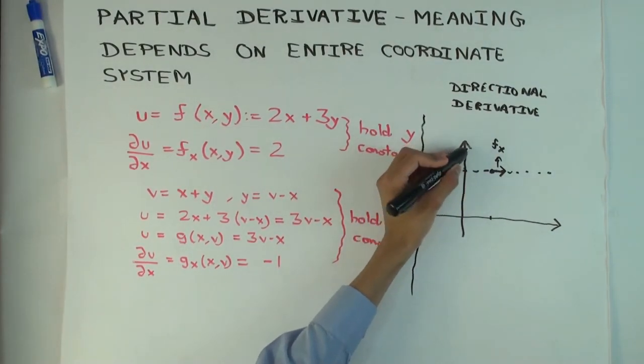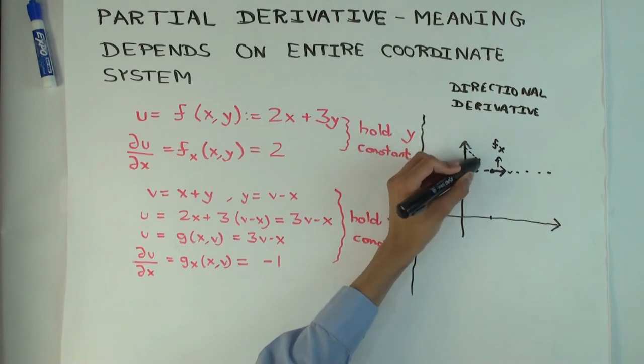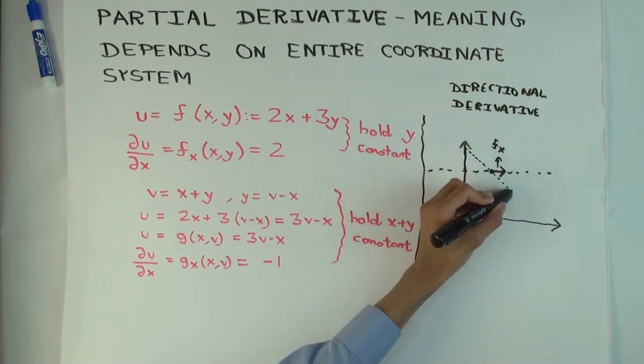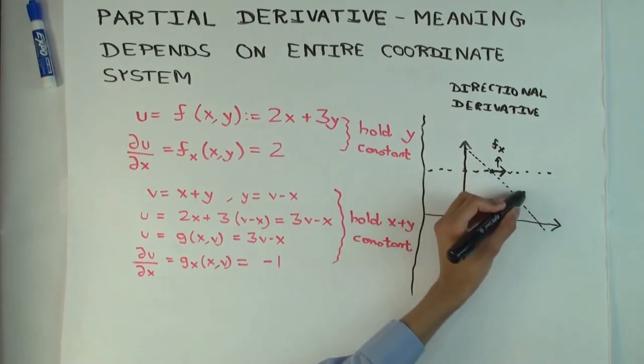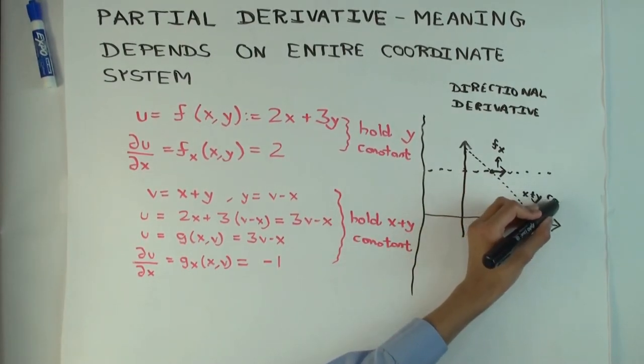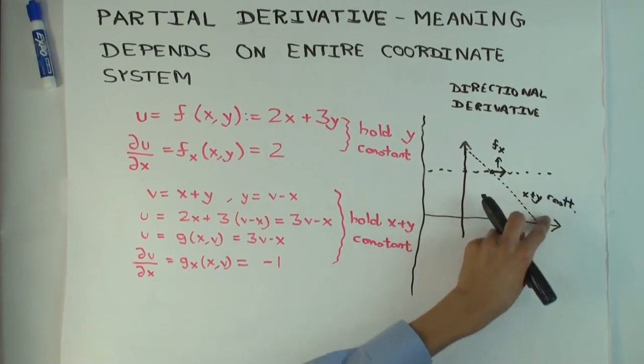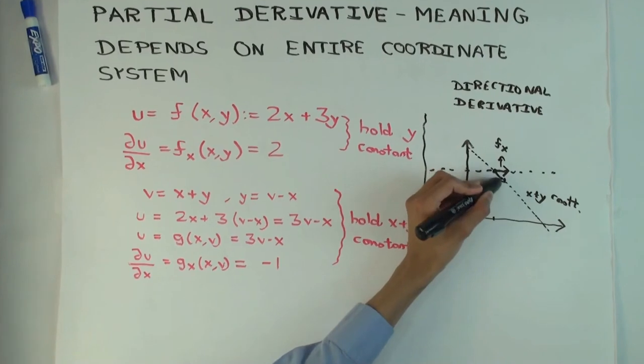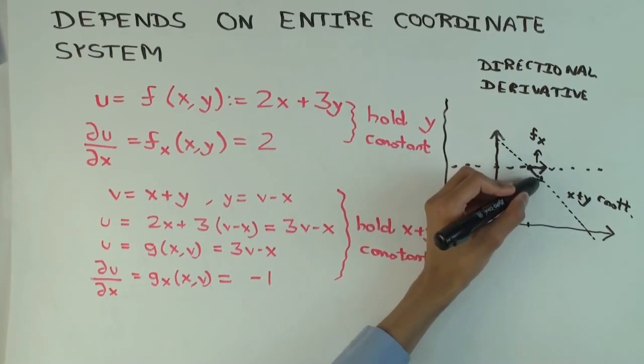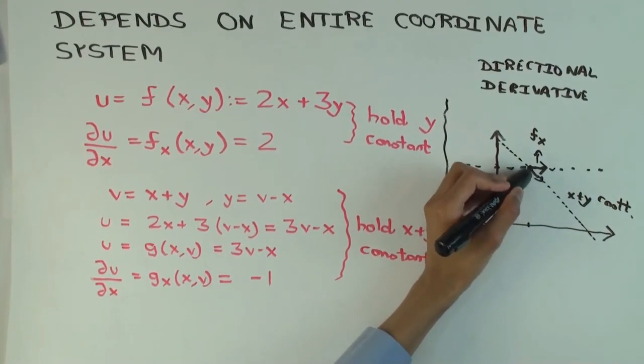So what we're really doing is, if we decreased x, you will be increasing y. What you're really doing is you're moving along a line of this form. What type of line is this? This is x plus y constant. What we're doing is we're moving along this type of line and trying to figure out, how does u change if we move along this line? So if we increase x and decrease y correspondingly.